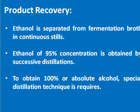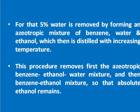The last and most important stage is recovery of the product. Ethanol is separated from fermentation broth in continuous stills. Ethanol of 95% concentration is obtained by successive distillations. To obtain 100% or absolute alcohol, a special distillation technique is required. For that, the 5% water is removed by forming an azeotropic mixture of benzene, water, and ethanol, which is then distilled with increasing temperature. This procedure removes first the azeotropic benzene-ethanol-water mixture and then the benzene-ethanol mixture, so that absolute ethanol remains.